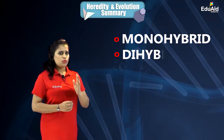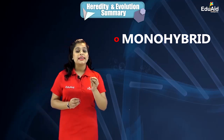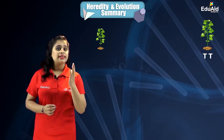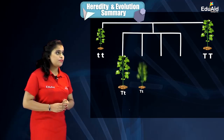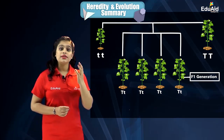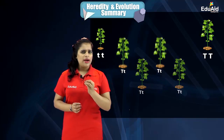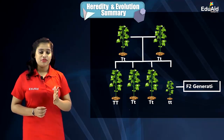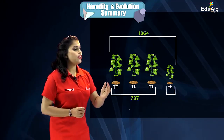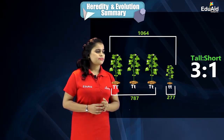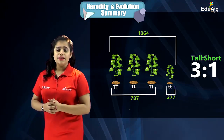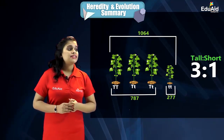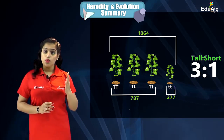In monohybrid inheritance, which involves the inheritance of a single pair of contrasting characteristics, we learned that in the first filial generation only the dominant traits are expressed, whereas in the second filial generation both dominant and recessive traits are expressed in a ratio of 3 to 1. The ratio of tall to short plants in F2 was 3 to 1 — the monohybrid phenotypic ratio.